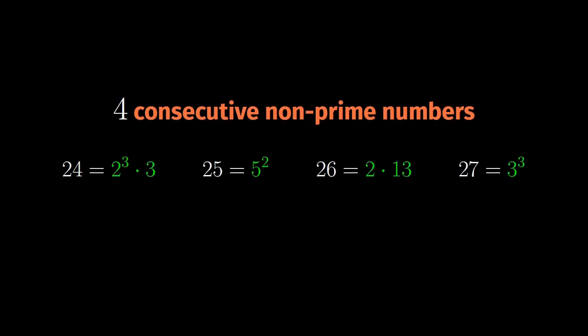As for a list of five consecutive non-prime numbers, well, that's easy. We take the previous list and we have 28, which is 2 squared times 7.